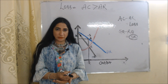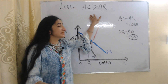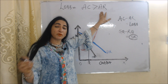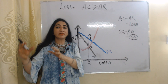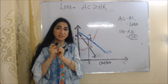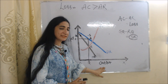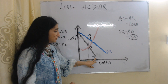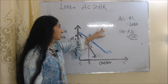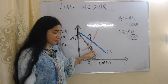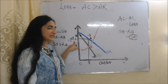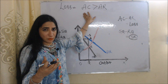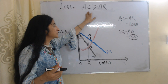A firm gets a loss when AC is more than AR — that is, when per unit cost is more than per unit revenue. In this diagram, the X-axis has output and the Y-axis has cost, revenue, and price. The black curve is MR, the blue curve is AR, and the red curve is MC. E is the equilibrium point, OQ is equilibrium output, and OP is equilibrium price. To show loss, we need AR and AC. We draw the average cost curve above the average revenue curve, because in the case of loss, average cost is more than average revenue.